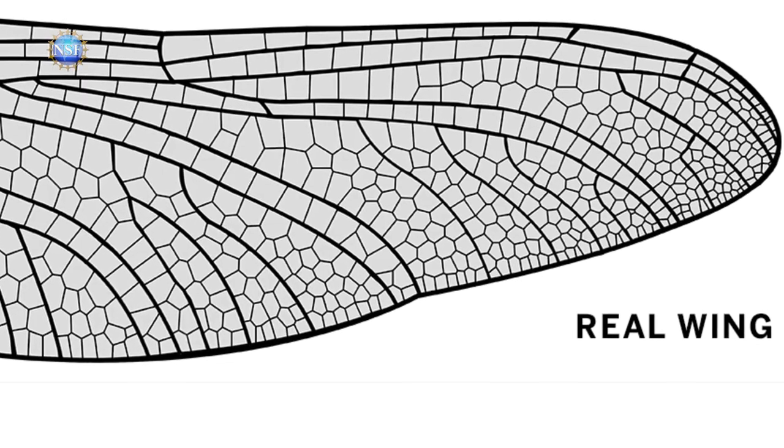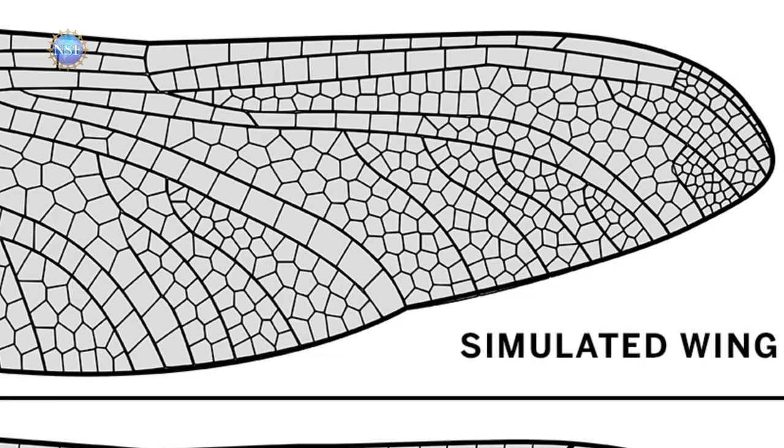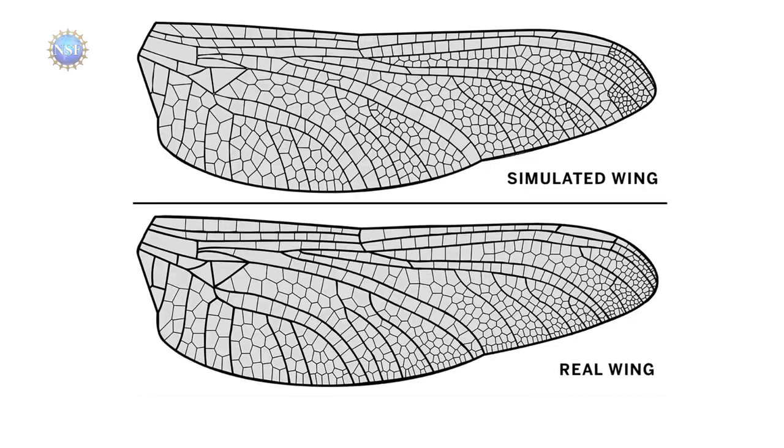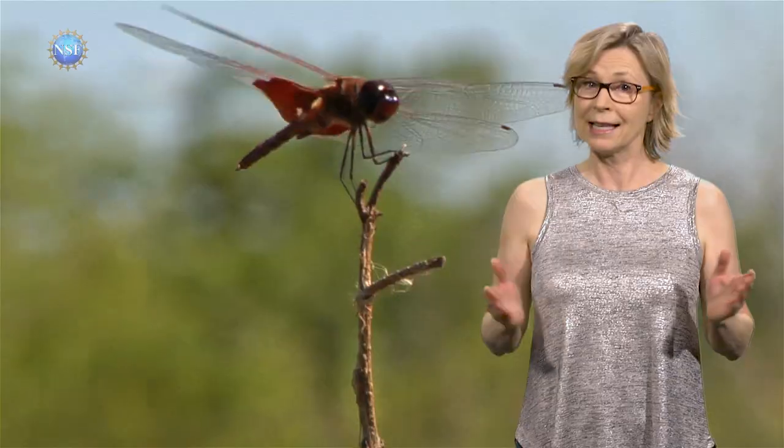The model works so well, it sometimes fools the researchers, generating patterns close to the real thing for even distantly related species. This may be helpful for studying the evolution of wing structure.